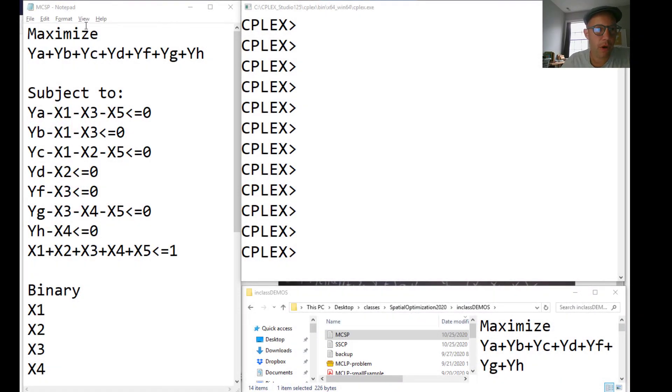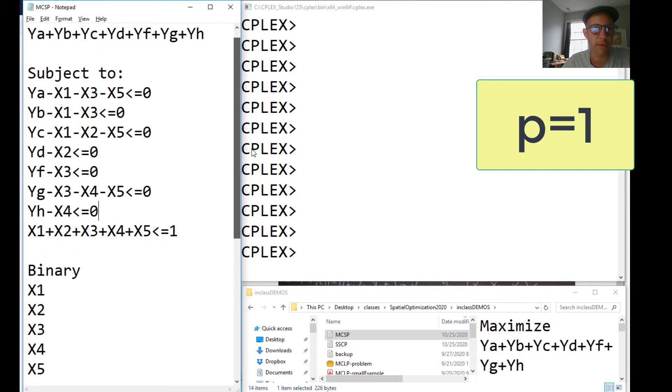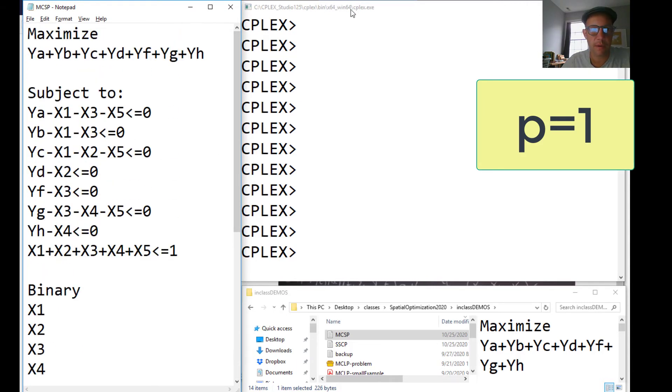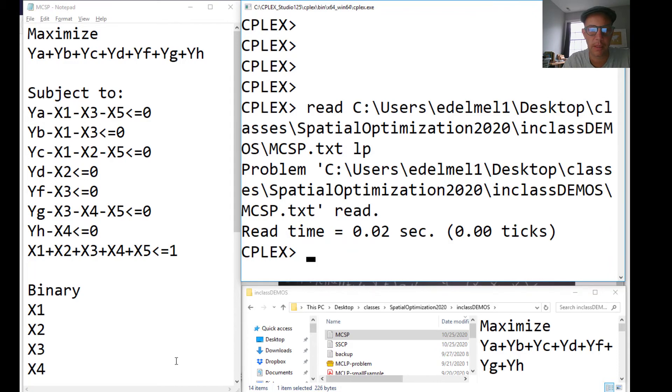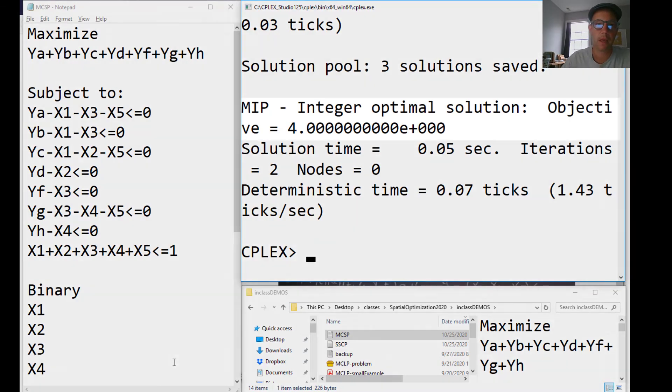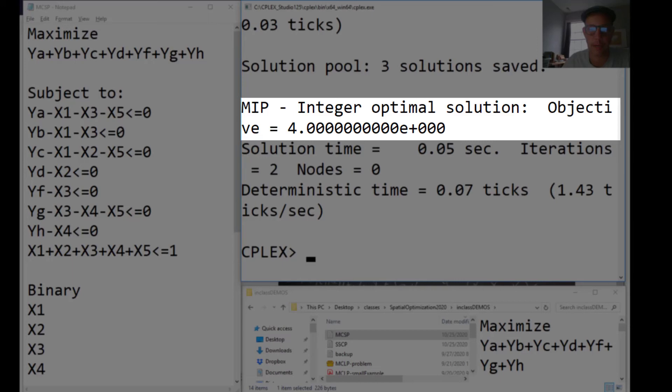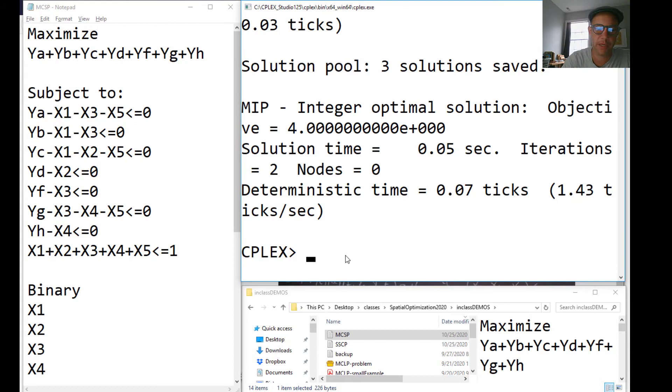Okay, I'm going to illustrate now the problem and solve it within CPLEX. Here to your left, you have the notepad document with the objective function, the constraint, and then the binary, integer and binary constraint. We have here to the right CPLEX. Let's open. We're going to read the problem here. LP programming. We're going to optimize this, and we get the solution is equal to four right here.